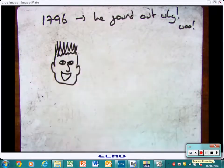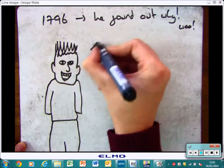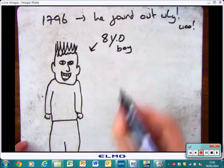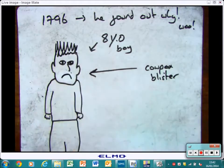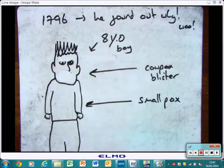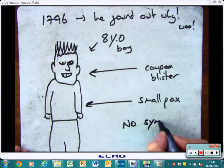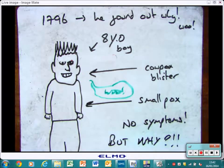He made his discovery in 1796 and found out why smallpox didn't affect milkmaids. In a way that probably wouldn't be allowed today, he used an eight-year-old boy called James Phillips. He took the pus from a cowpox blister and rubbed it onto the skin of this boy. The kid got a mild fever, that was all. Then once he'd recovered, he did the same with the pus from a smallpox blister and he didn't get any symptoms. He was perfectly safe. But the question is, why?